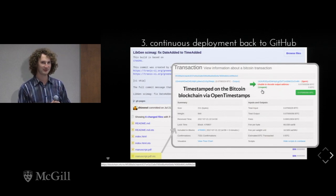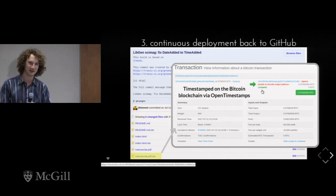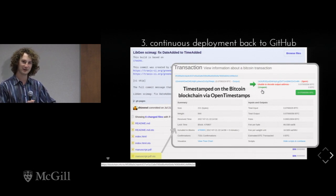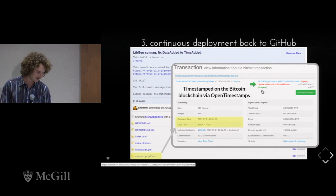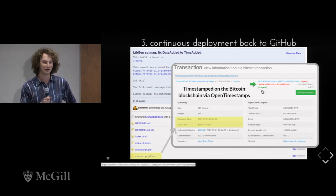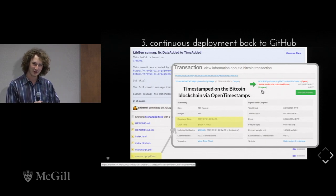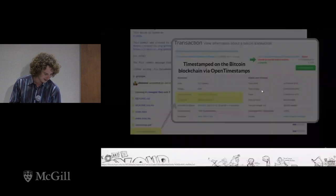Another aspect: since we use continuous integration, it can do any sort of task you want. One task we have it do is timestamp manuscripts on the Bitcoin blockchain, so you know a specific version of the manuscript existed at that specific date and time. This could be helpful if there were ever an authorship dispute or someone claimed you revised your paper after the fact — you can prove the paper existed then.